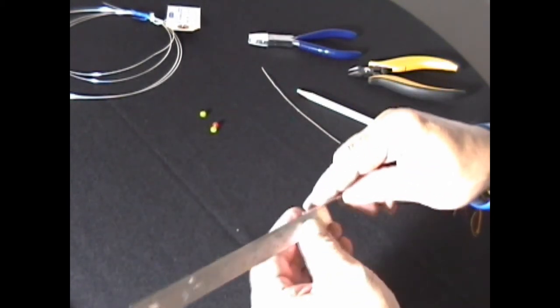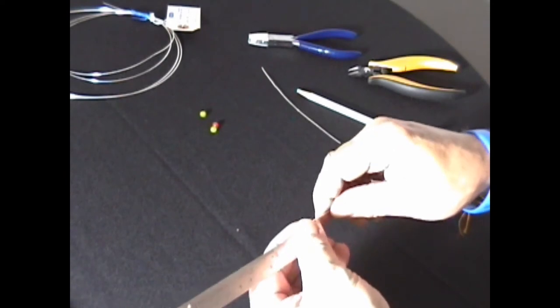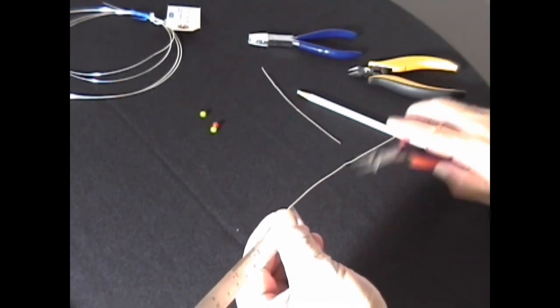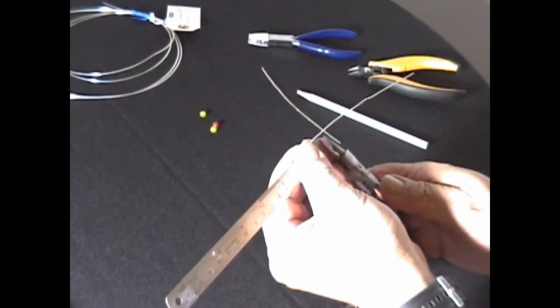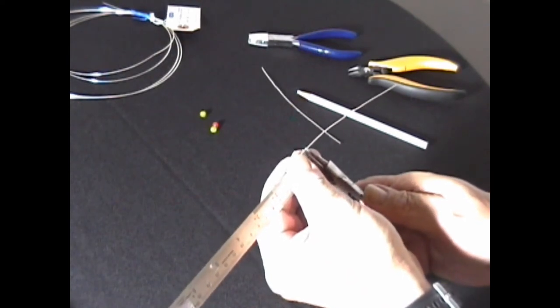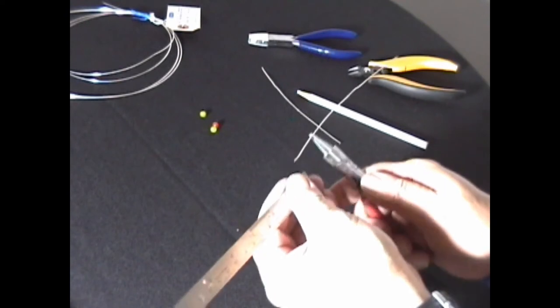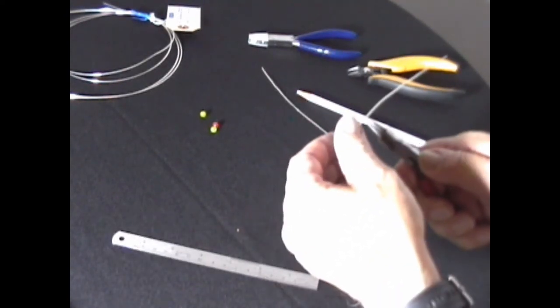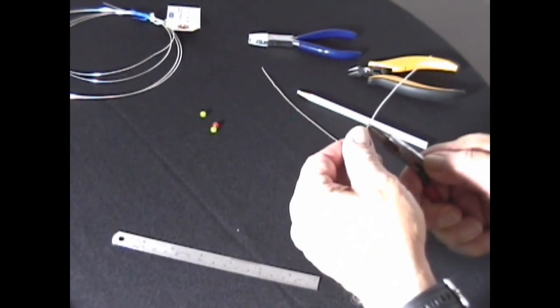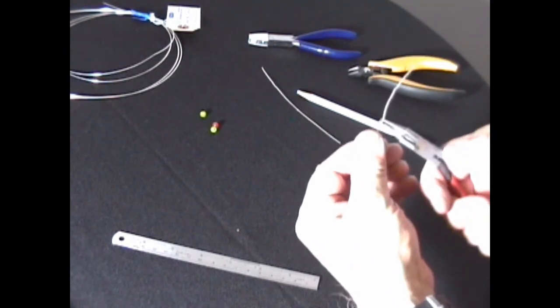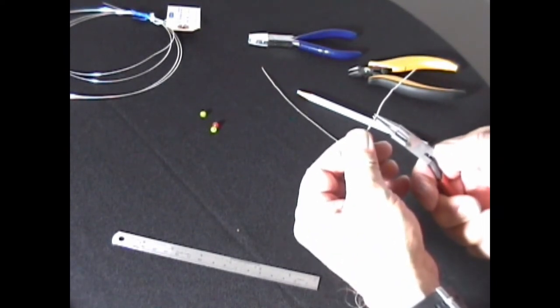After you cut two six-inch pieces, you take one of them. You measure one and one-eighth inch, you grab it with your pliers at that point, and then you bend it 90 degrees.